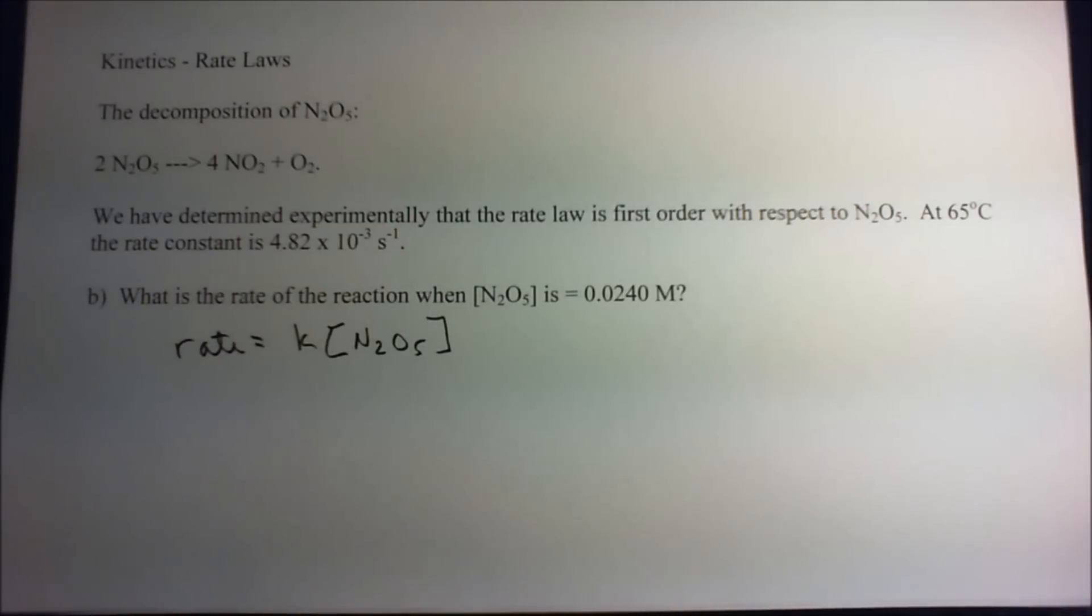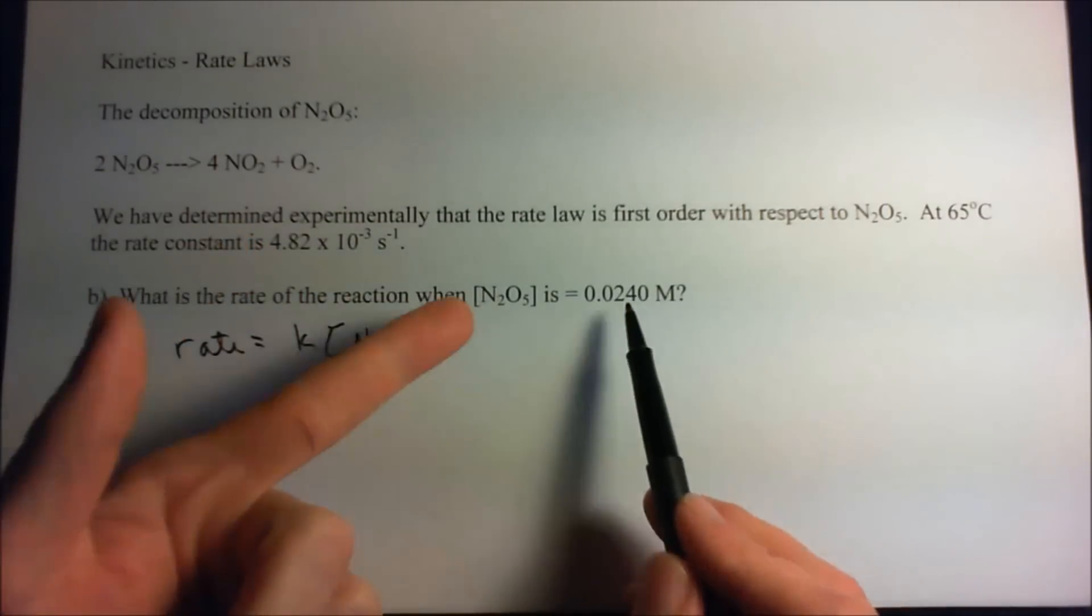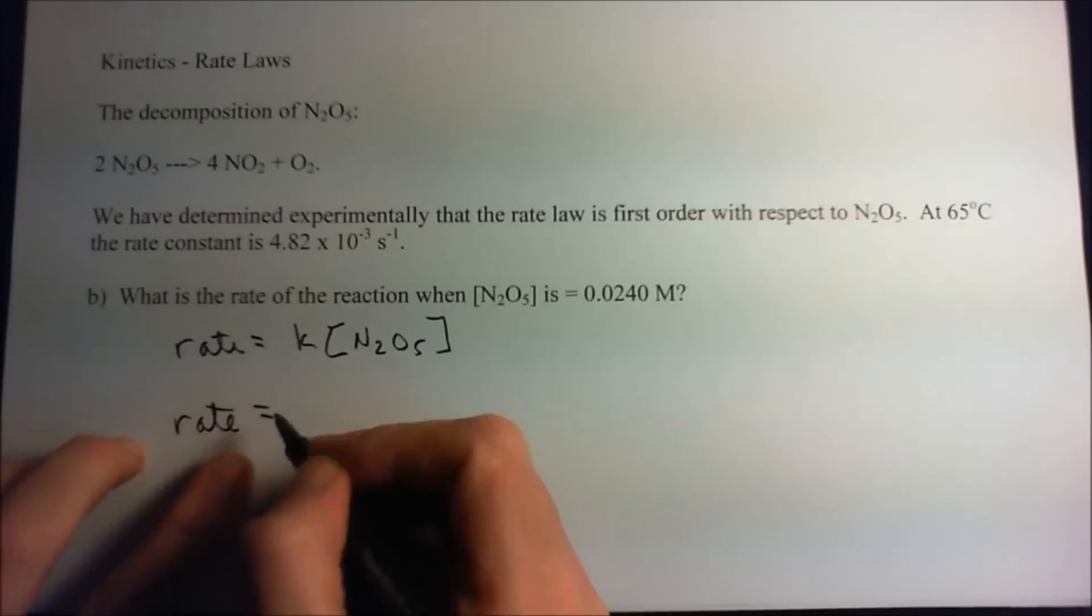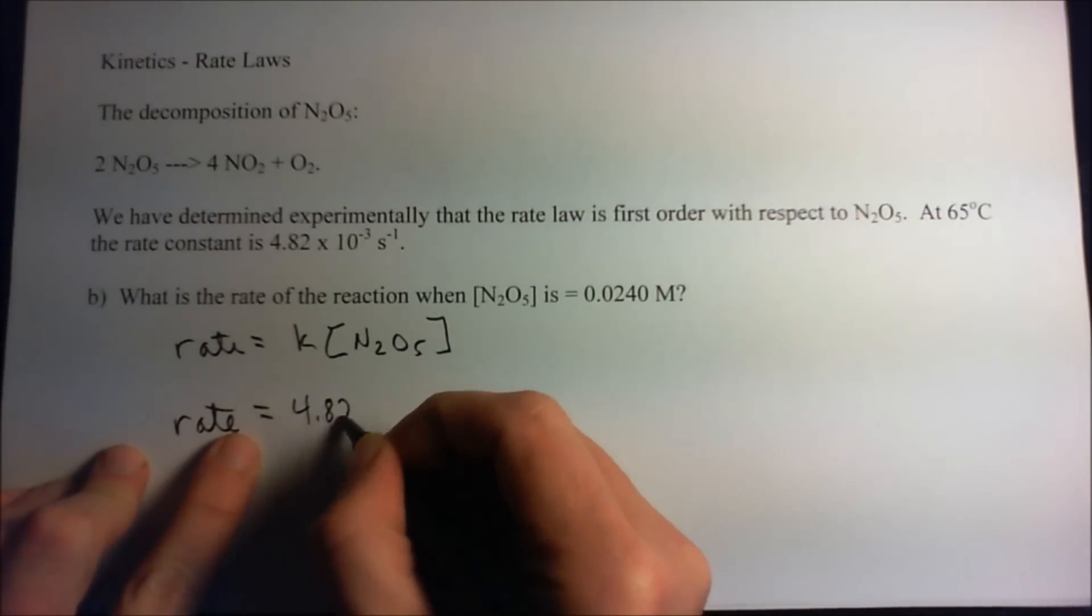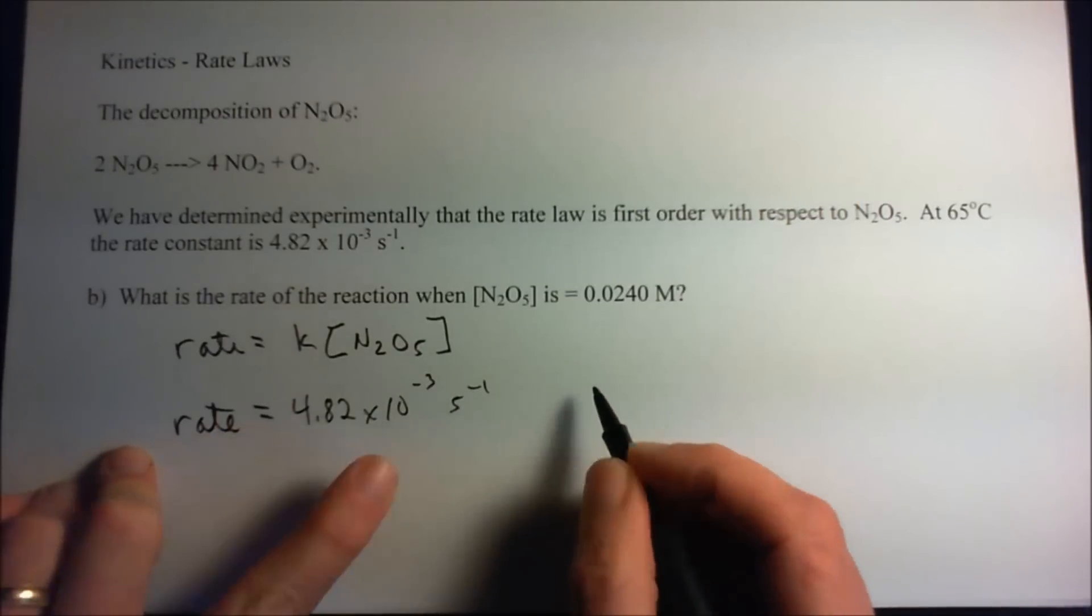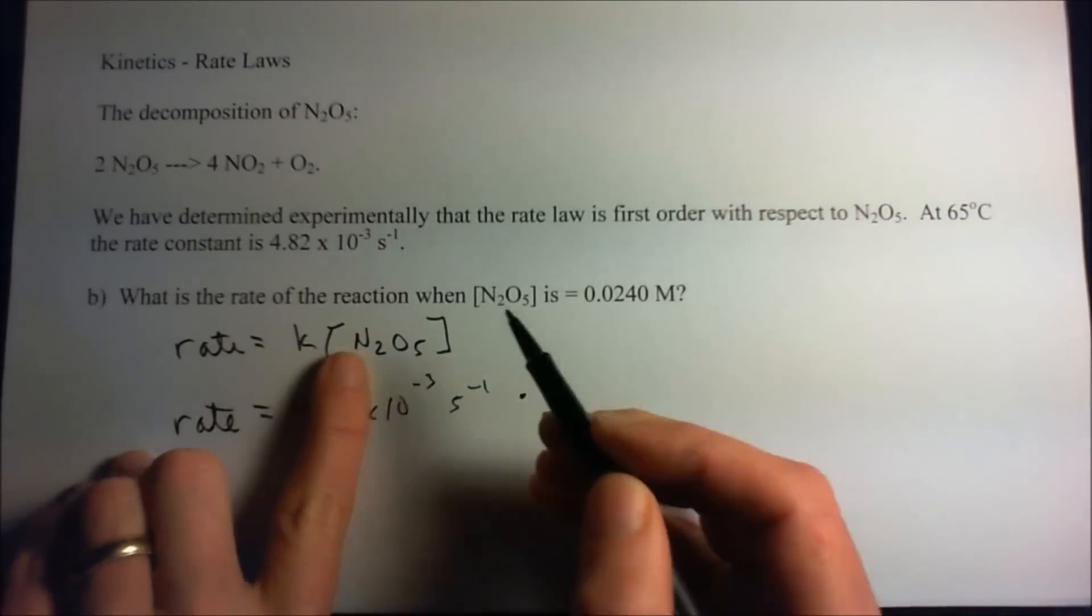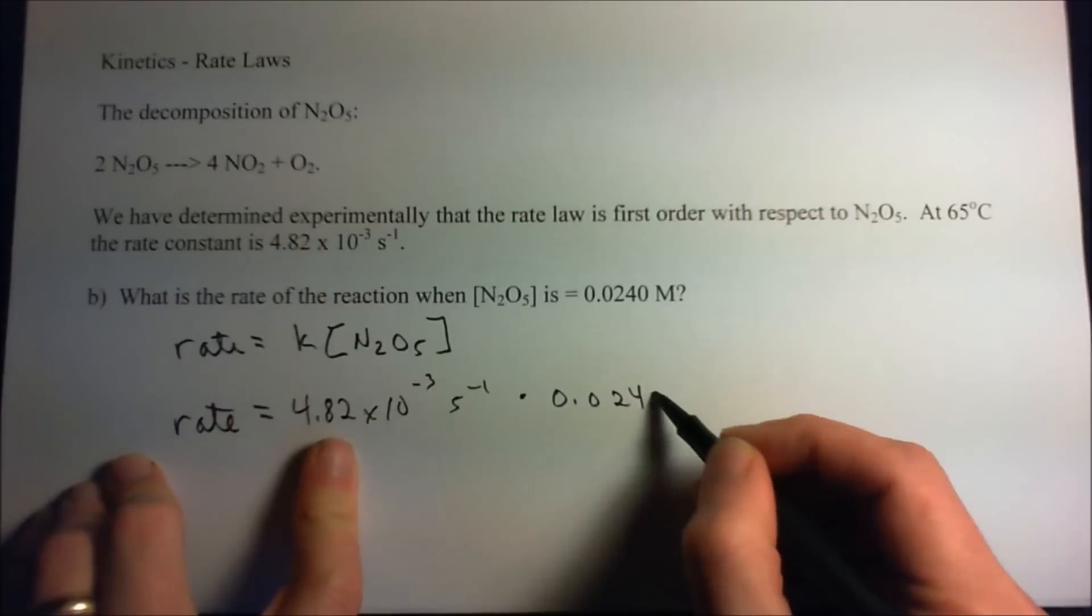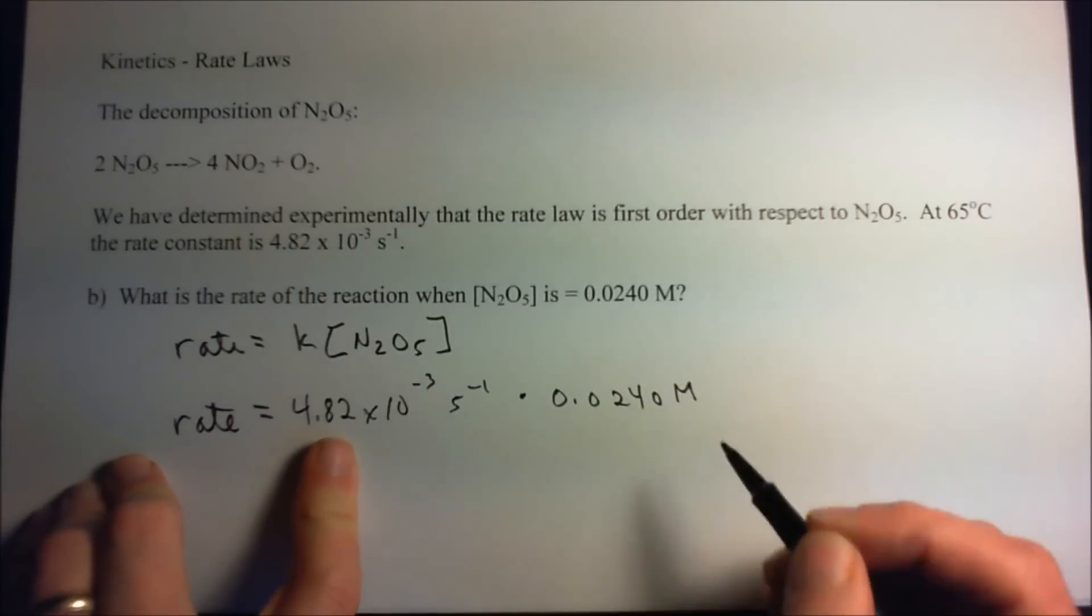And they want to know, well what is the rate of this reaction if we're given the rate constant of 4.82 times 10 to the minus third per second and we're given the concentration of 0.0240. Well it's as simple as you just plug in the numbers. And so our rate is going to be our rate constant, 4.82 times 10 to the minus third per second, times the concentration N2O5, and that is 0.0240 molarity.